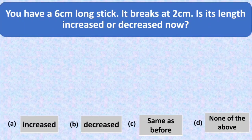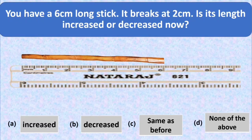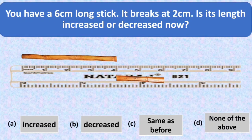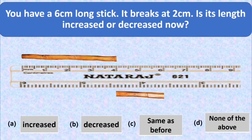Now let's check the situation. Here we have a 6 cm long stick. Now it gets broken at a distance of 2 cm. The length of the stick is now 4 cm. You can see on the scale, the length is now 4 cm, so the length is decreased. Option B, decreased is the right option here and we will put a tick mark at option B.